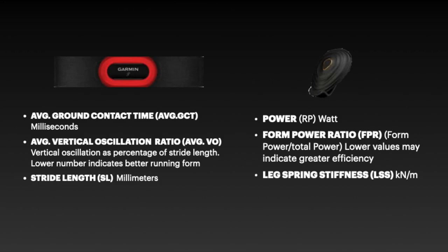So basically, the ground contact time indicates the amount of time that your foot is in contact with the ground on each step, measured in milliseconds. The average vertical oscillation ratio is the vertical oscillation divided by your stride length — it should be under 10% if you want to run with optimal efficiency. The stride length is the distance covered when you take two steps. The running power is the amount of energy we are spending during a given period of time. The form power ratio is the form power divided by the total power — lower values may indicate greater efficiency.